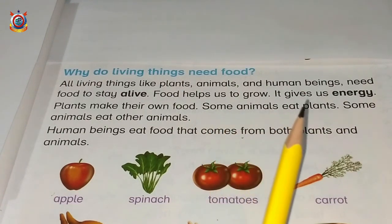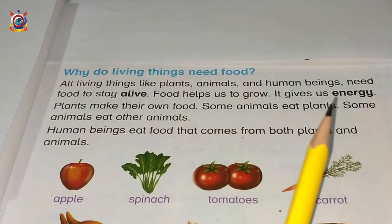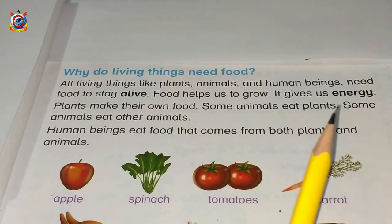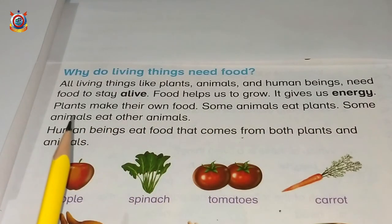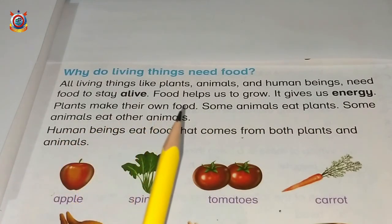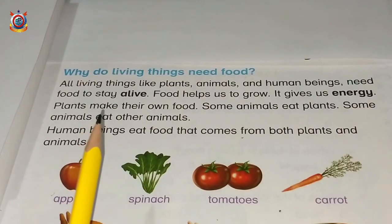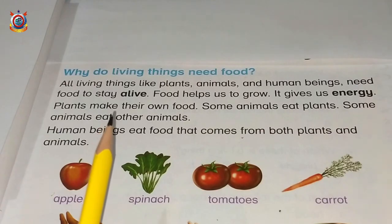And it gives us energy. Do you know, students? When we eat food it gives us energy — hamen taaqat milti hai when we eat food. Plants make their own food — plants apni food khud prepare karte hain, sunlight, soil, air, aur water ki help se.